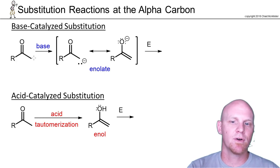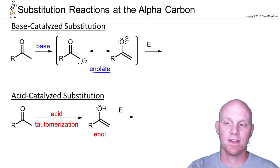With the base-catalyzed, you're simply going to deprotonate one of those alpha hydrogens to form your enolate. Then when you react that with an electrophile, the enolate is your nucleophile, and it's definitely the stronger nucleophile when compared to the enol.